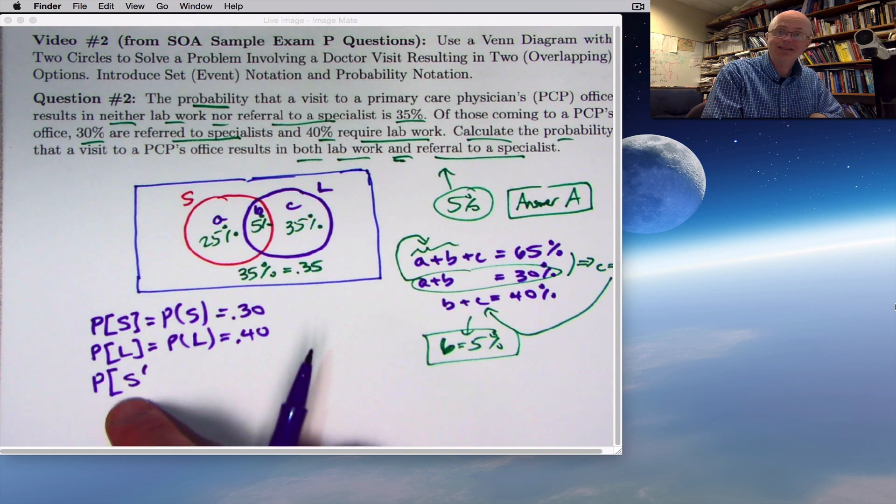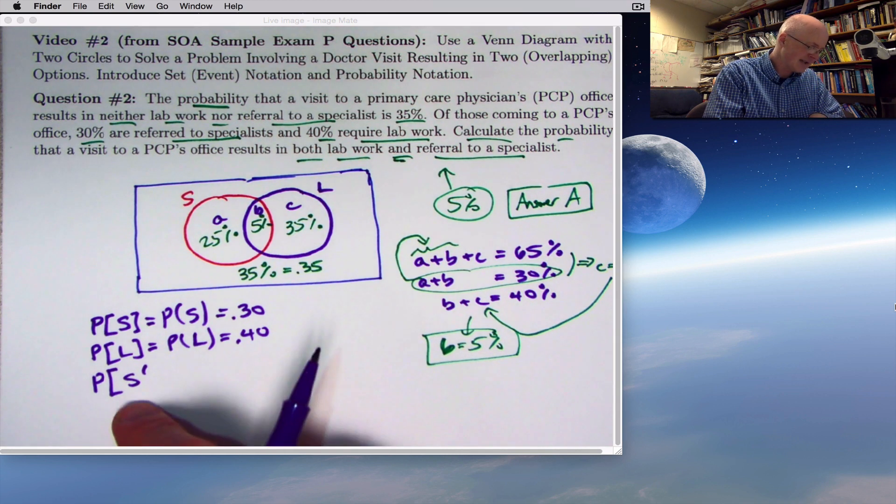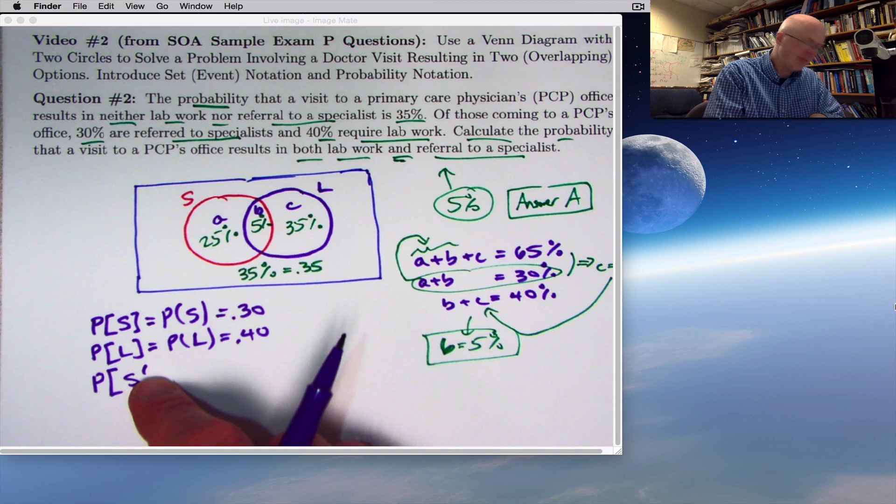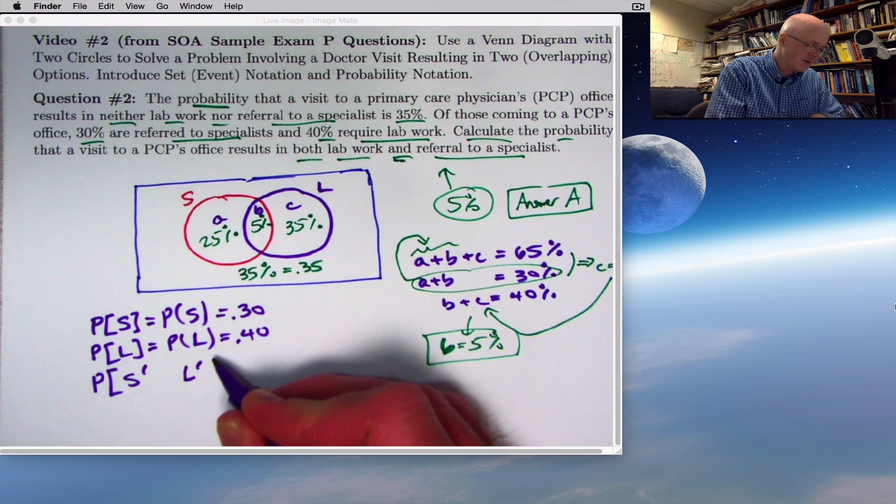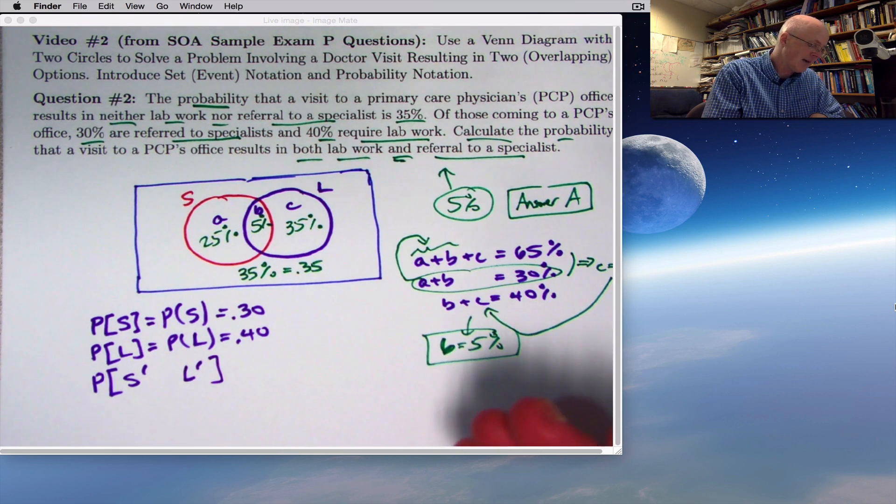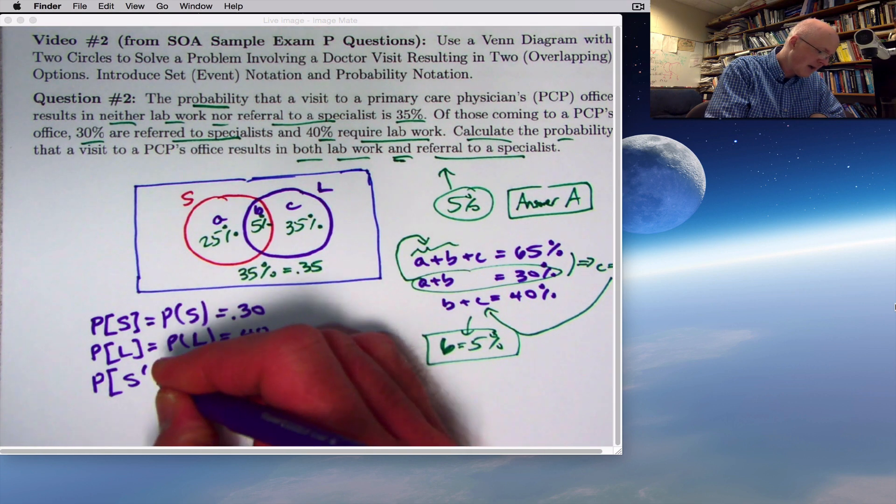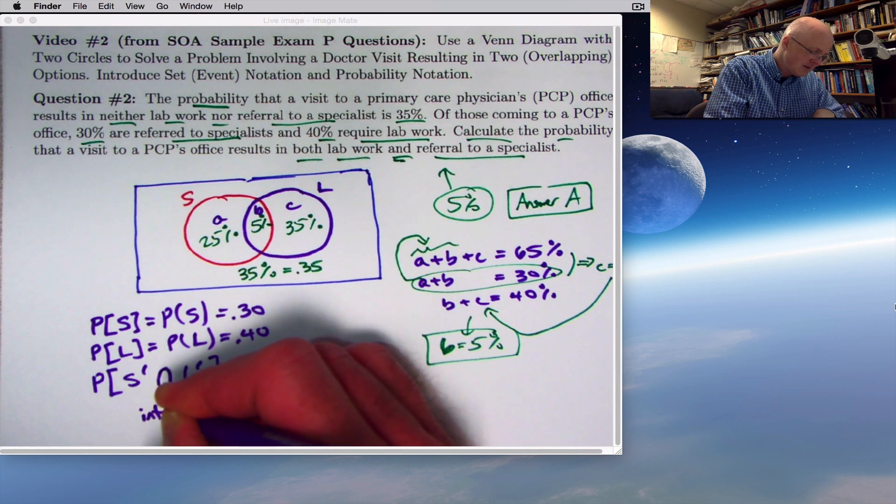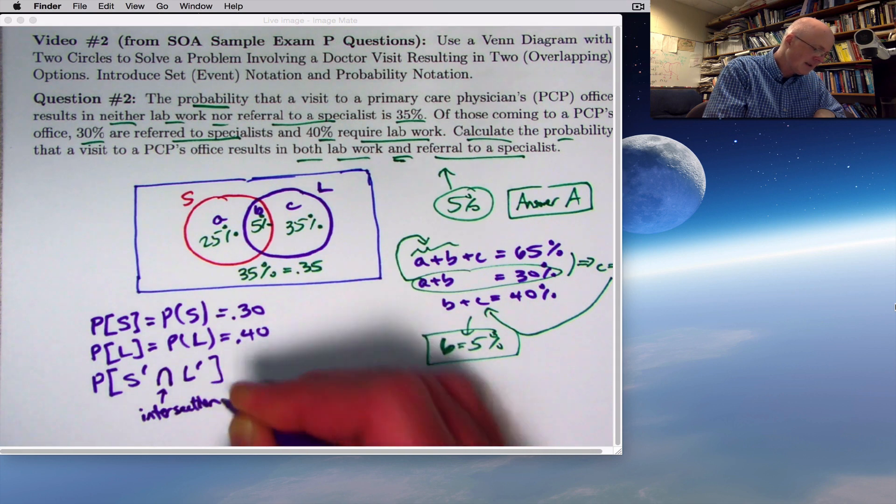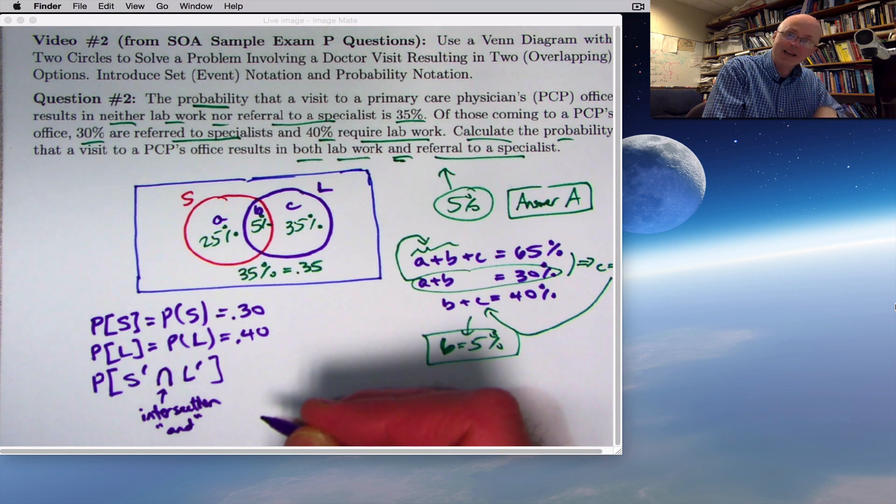This is not a derivative from calculus. This is notation with sets or events. S prime means the complement of S, those people who were not referred to a specialist. L prime represents those who did not have lab work done. Now I could put the word 'and' here. It's more common to put the intersection symbol. In the context of events, it essentially means 'and', which is fortunate because it almost looks like an A.